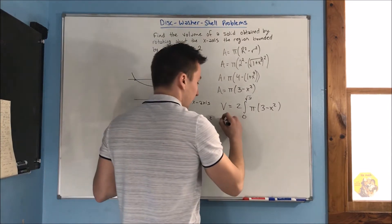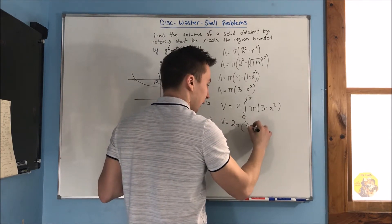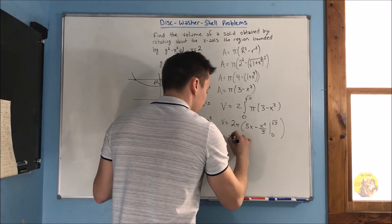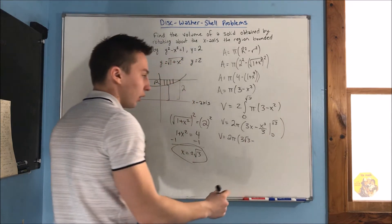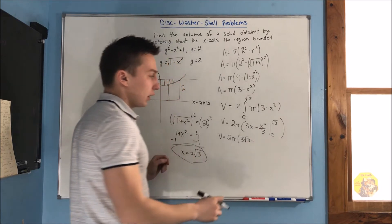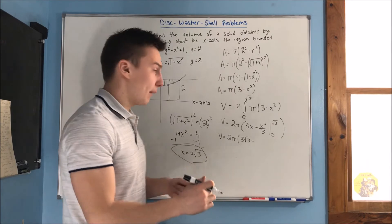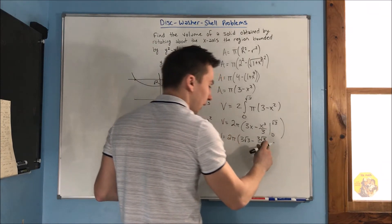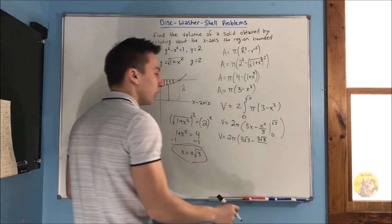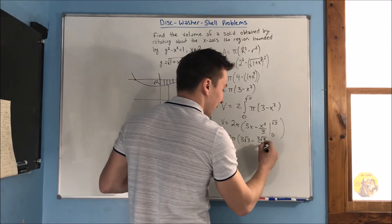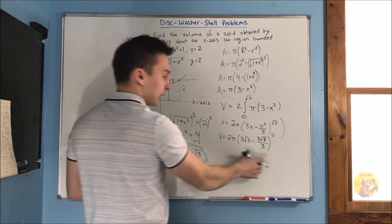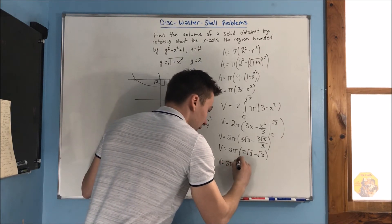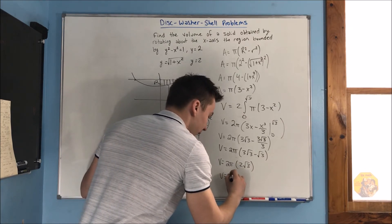Our volume equals 2π times the integral from 0 to sqrt(3) of (3 minus x²) dx, which gives 2π times [3x minus x³/3] evaluated from 0 to sqrt(3). Plugging in sqrt(3): 3·sqrt(3) minus (sqrt(3))³/3. Since (sqrt(3))³ equals 3·sqrt(3), that term becomes 3·sqrt(3)/3 equals sqrt(3). So we get 2π times (3·sqrt(3) minus sqrt(3)) equals 2π times 2·sqrt(3), giving a final answer of 4π·sqrt(3).